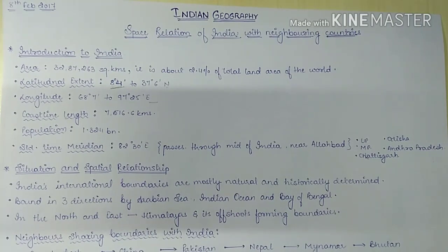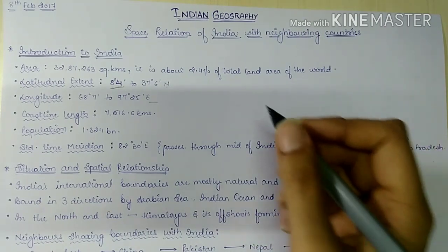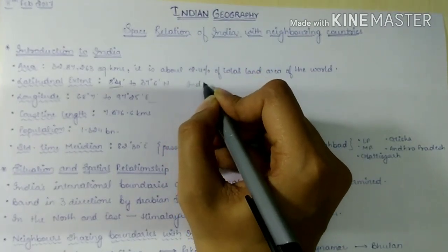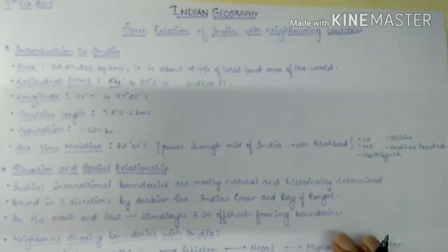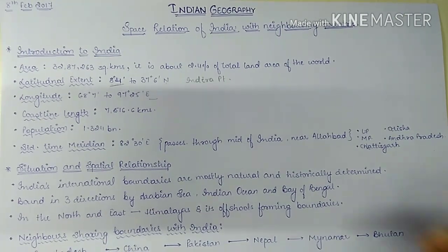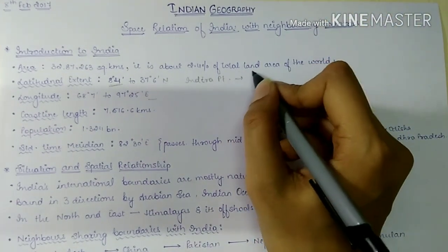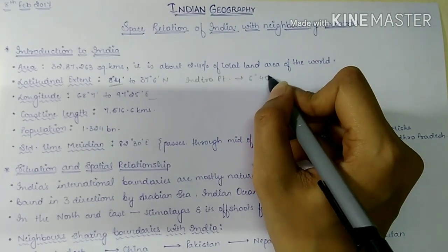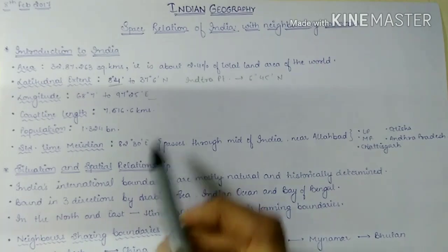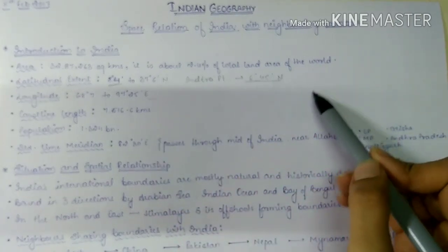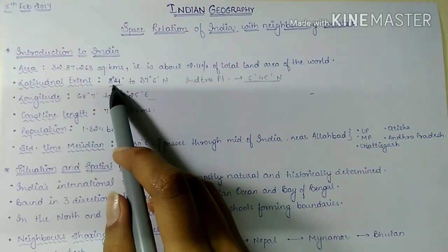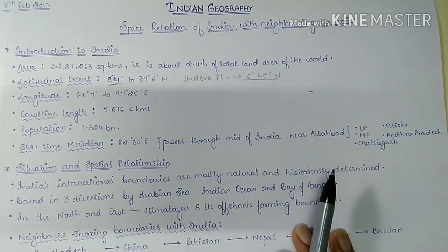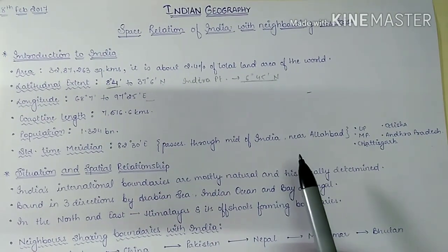Away from the mainland of India, the southernmost point of the country is in the Andaman and Nicobar Islands, and the point is Indira Point. This Indira Point is at 6 degrees 45 minutes north latitude. This is the southernmost point of India including its islands.